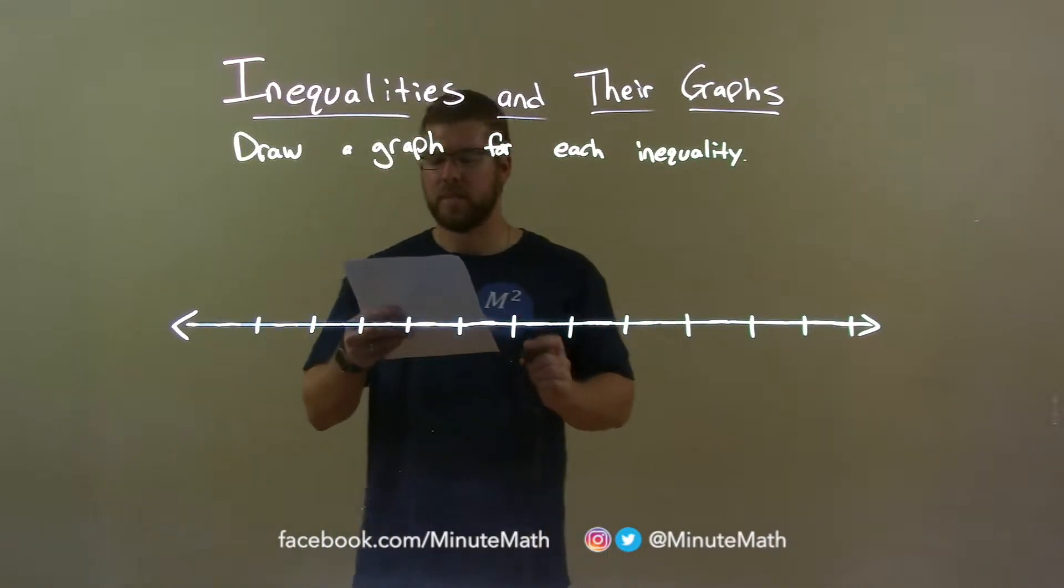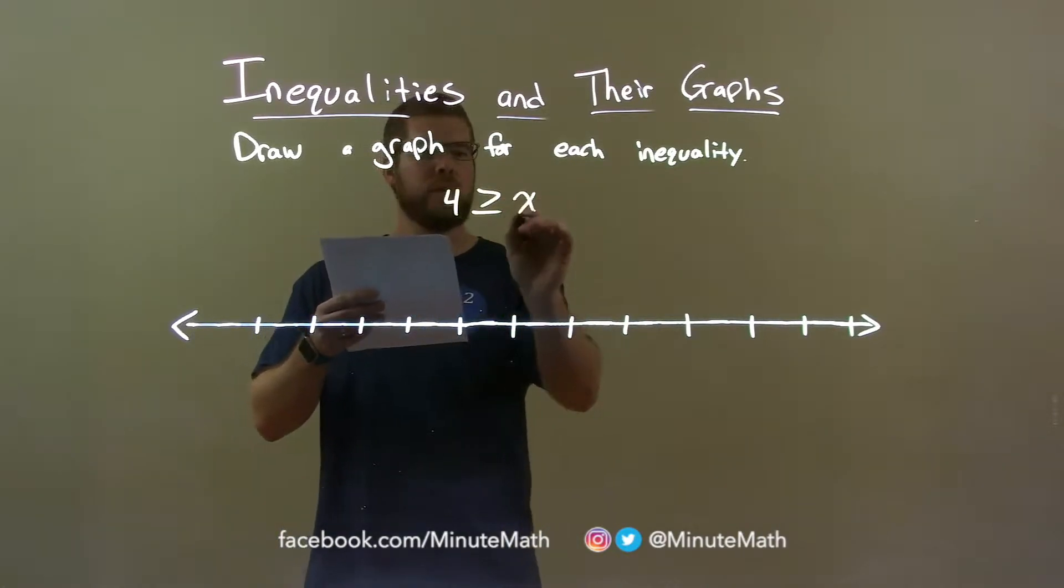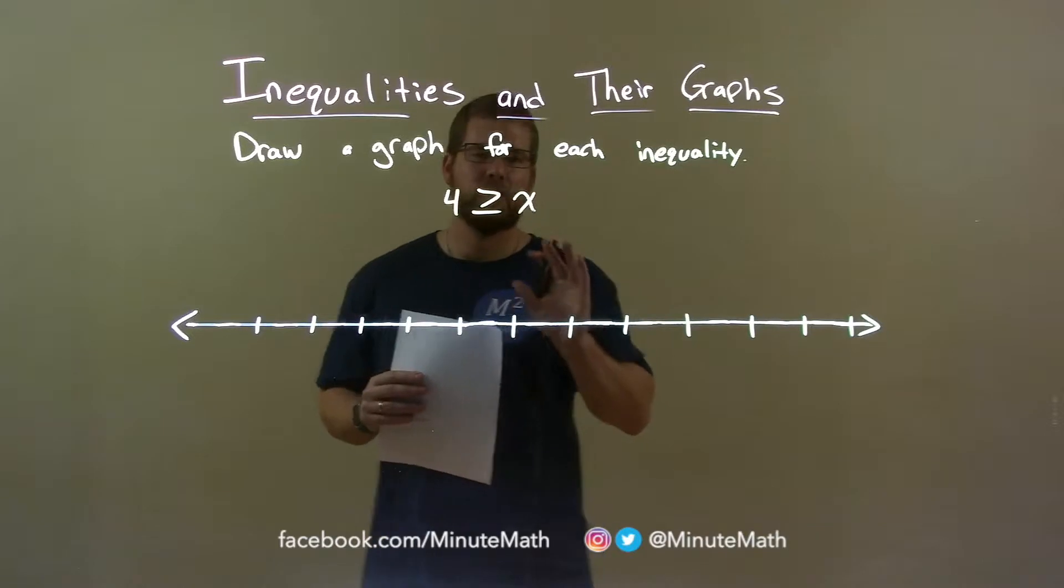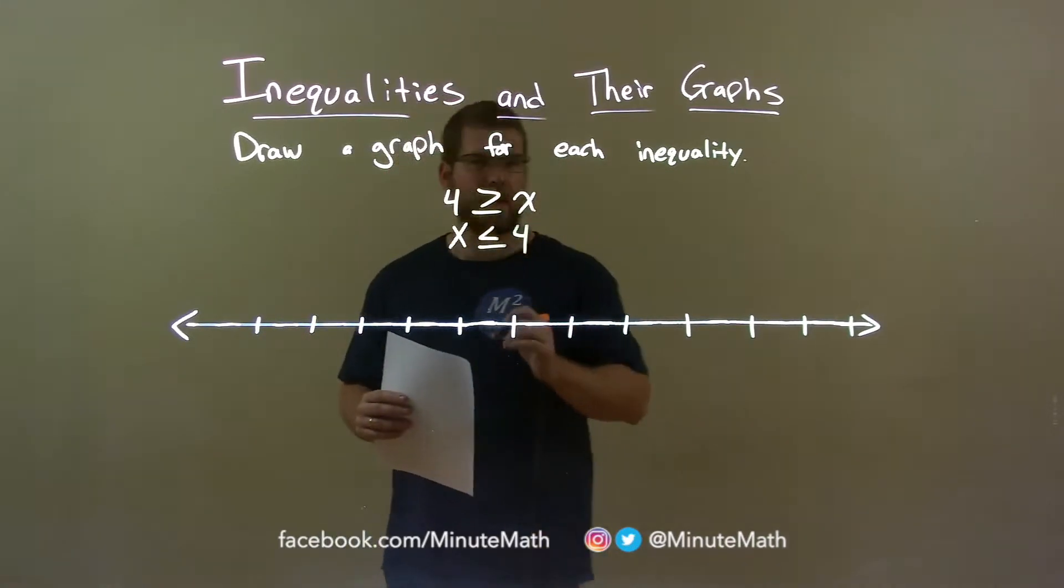If I was given this inequality, 4 is greater than or equal to x. First thing I like to do is flip this so I have the variable come first. That's the same thing as saying x is less than or equal to 4. I find that easier to use.